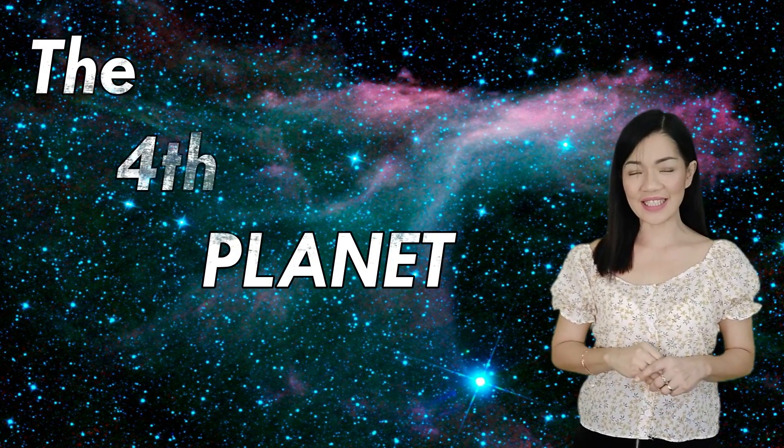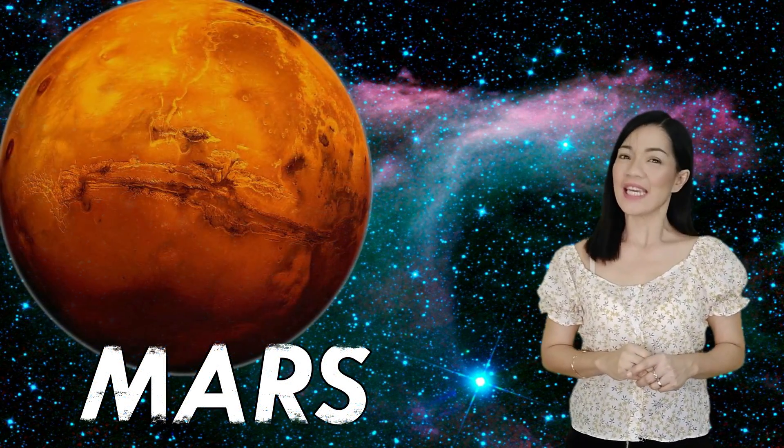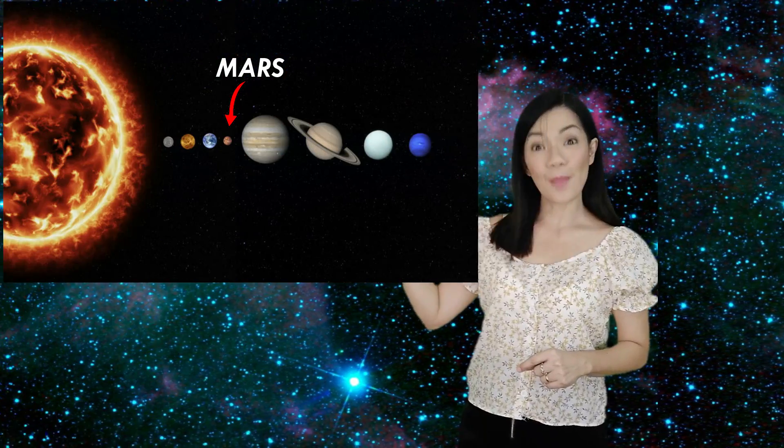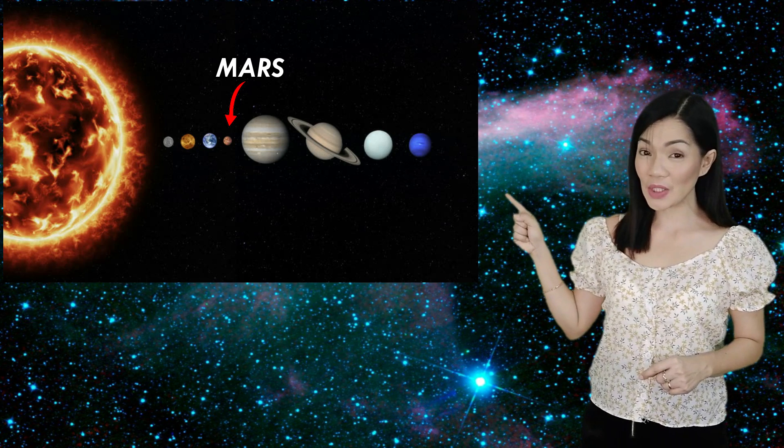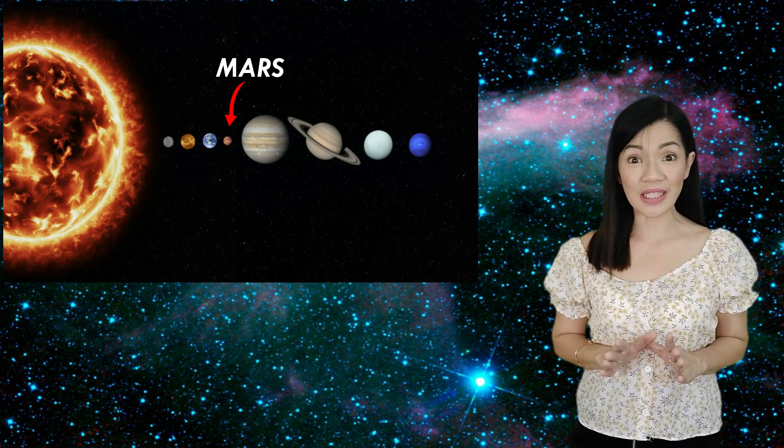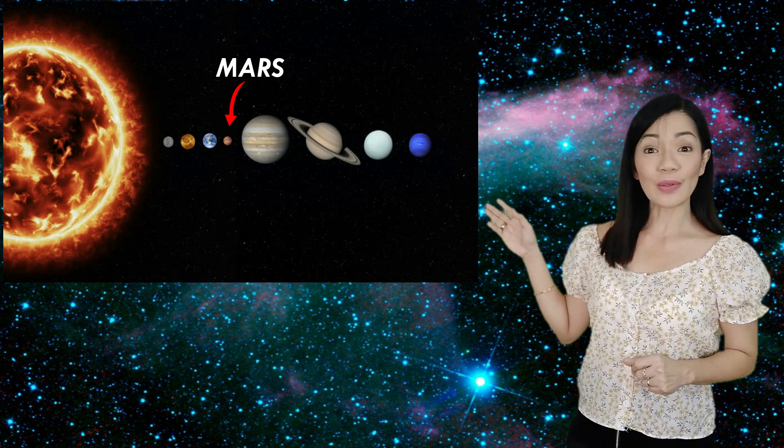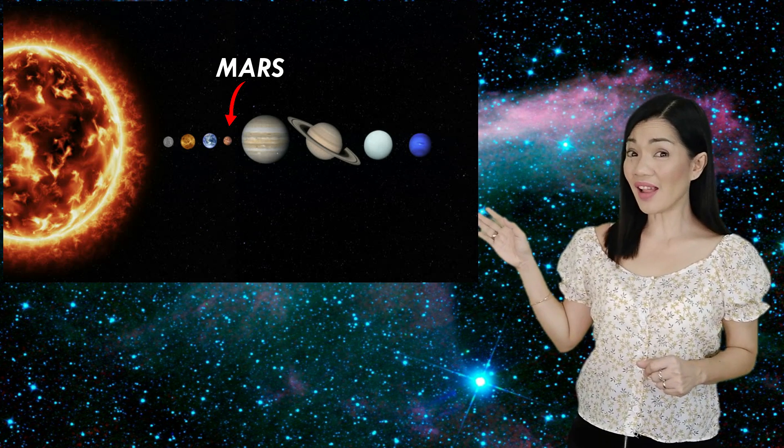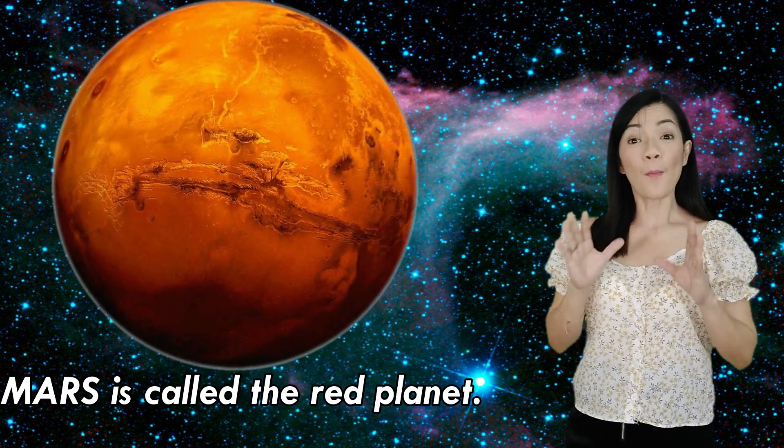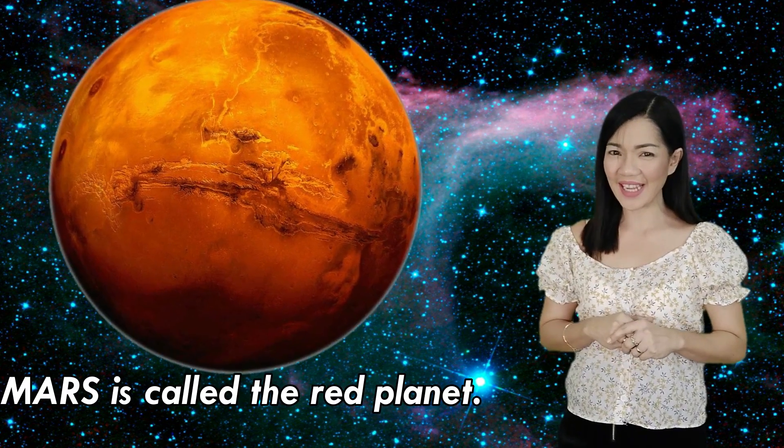The fourth planet is Mars. Yes! Mars is planet number four from the sun. Mars is in between Earth and Jupiter. What color is Mars? Look at Mars! What color is that? Yeah! It's kinda like reddish, orange. Because of its color, Mars is called the red planet.